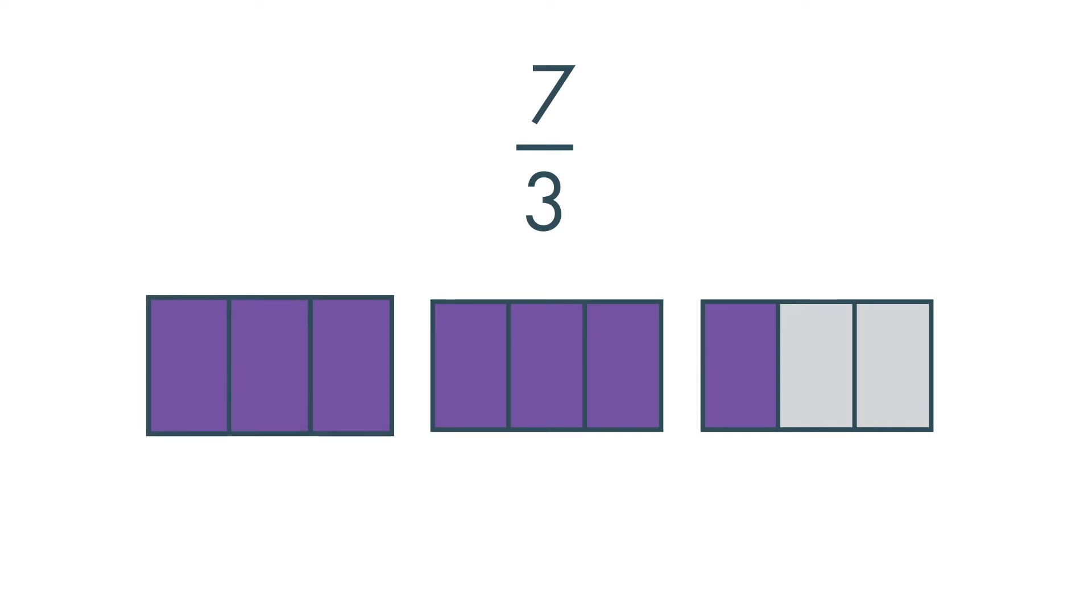Notice that two rectangles are completely shaded and one rectangle has one of the thirds shaded. We can also write this as the mixed number 2 and 1 third.